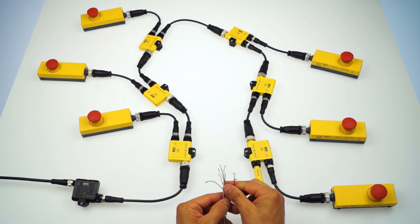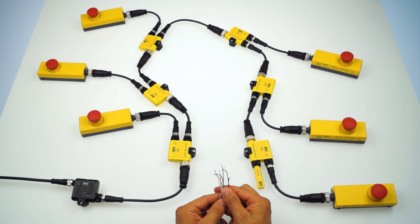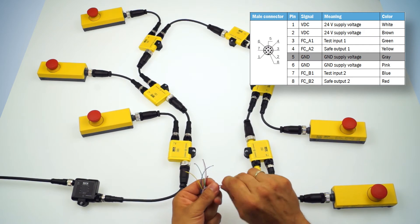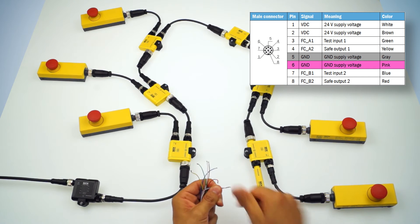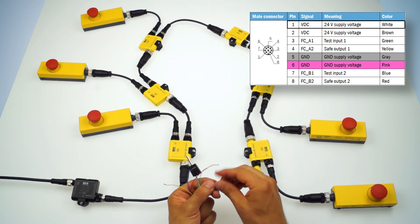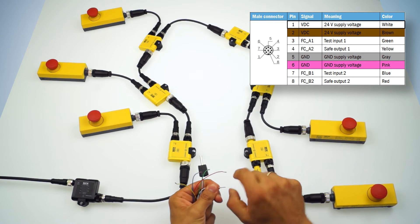On the other side of the cable we have the individual wires which I have already stripped. So for connecting the Masternode I need a grey and pink wire for ground and a white and brown wire for 24V.